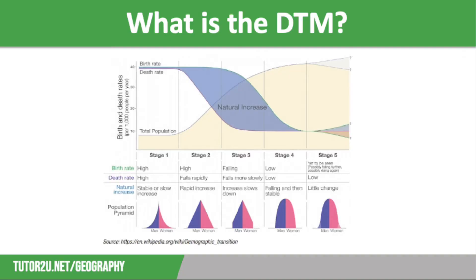As a country becomes more developed, its population characteristics change. The graph on the screen shows a general increase in the level of development from Stages 1 to 5. Let's have a look at these stages in more detail.